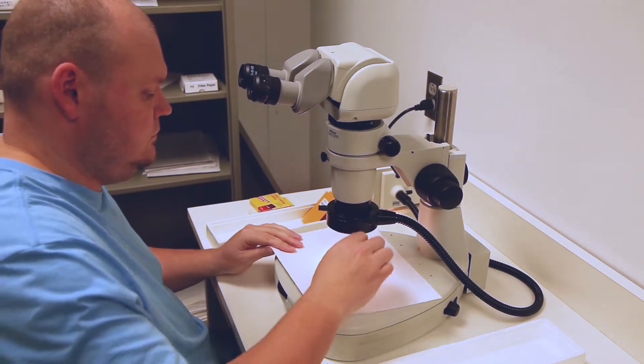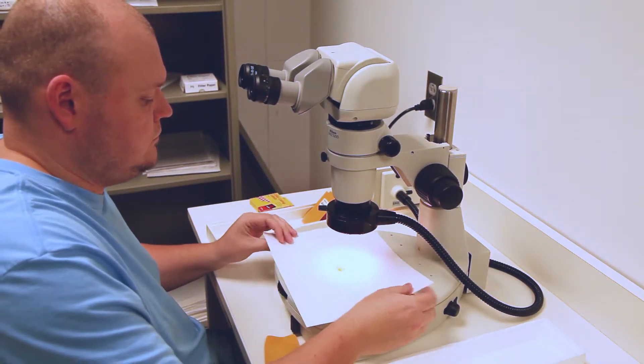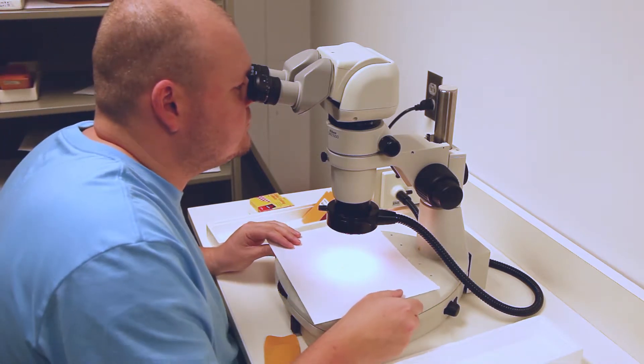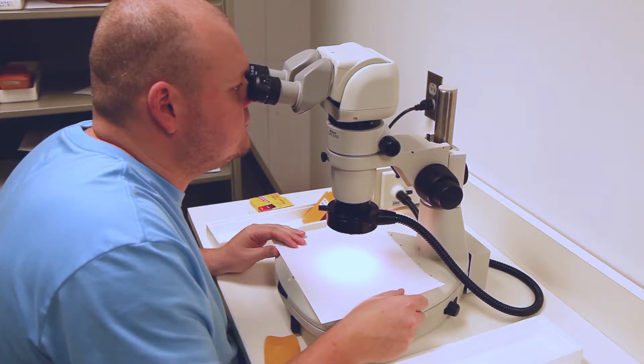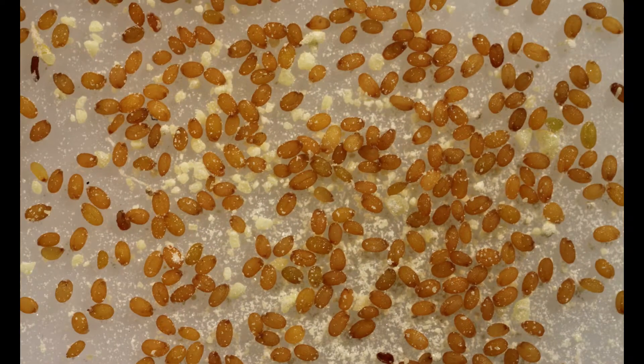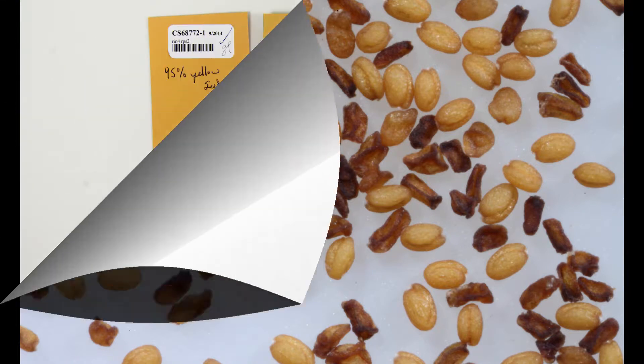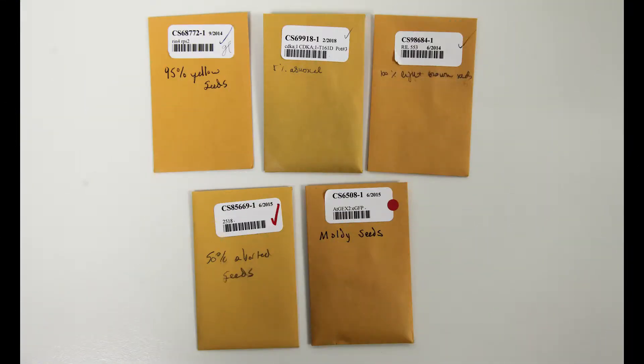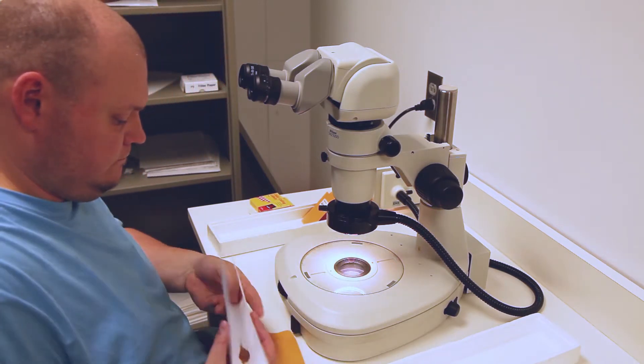Pour the seeds onto a clean piece of paper. Gently shake the paper to spread the seeds out. Use the microscope to observe the seeds looking for fungus contamination, dead insects, and seed phenotypes. Note observations on the seed envelope. Return the seeds to the envelope.